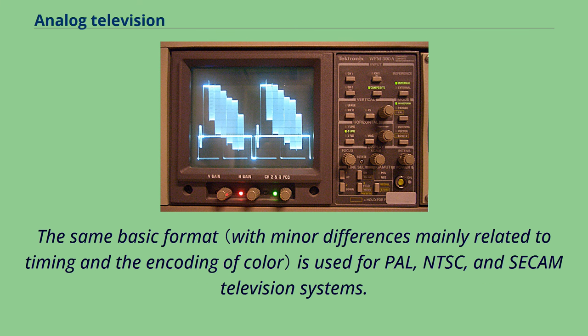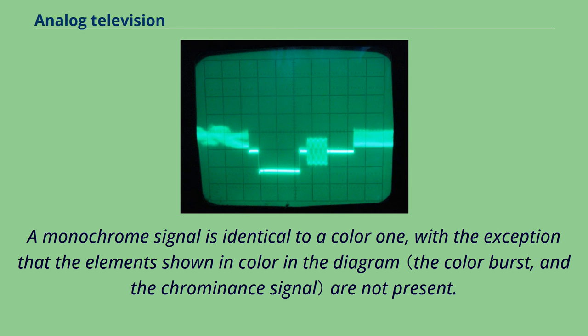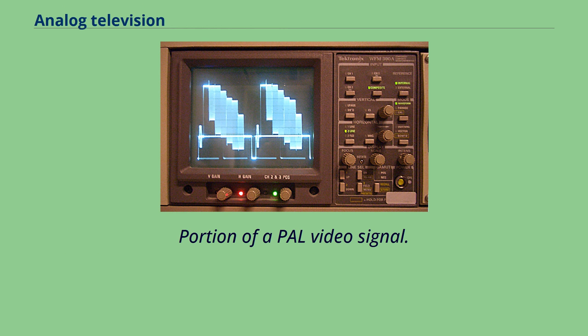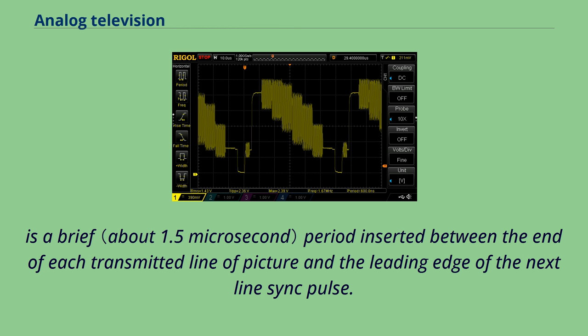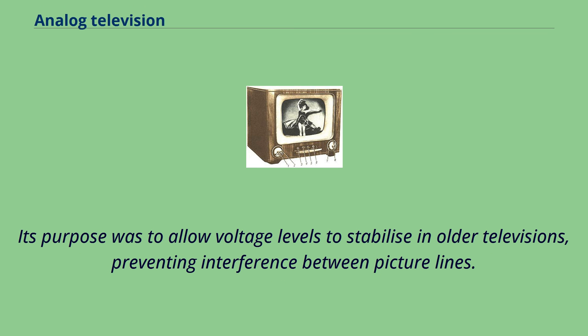The same basic format is used for PAL, NTSC, and SECAM television systems. From left to right: end of a video scan line, back porch, horizontal sync pulse, front porch with color burst, and beginning of next line. The front porch is a brief period inserted between the end of each transmitted line of picture and the leading edge of the next line sync pulse. Its purpose was to allow voltage levels to stabilize in older televisions, preventing interference between picture lines.